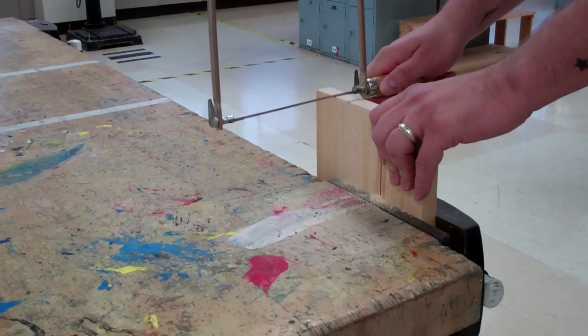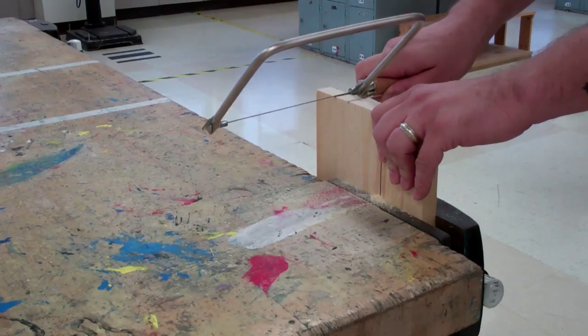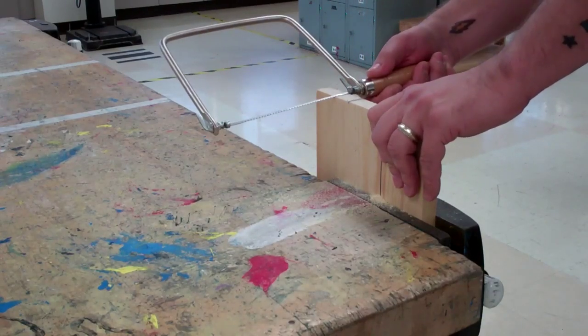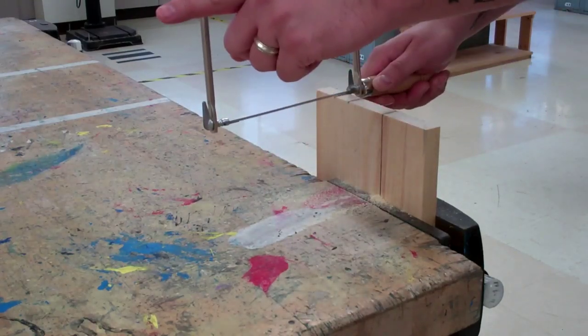You'll notice that as I cut the curve, the only thing that will change is my rotation of the saw to the left or to the right. The blade will always remain parallel to my workspace and pointing directly across from me.